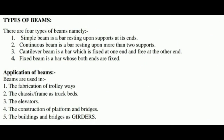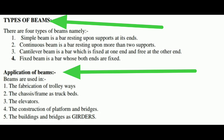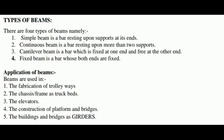In the previous video we already learned about beams — especially the expression for a rectangular beam. In this video we will see the types of beams and applications of beams. There are four types of beams: the first is a simple beam, second is a continuous beam, third is a cantilever beam, and fourth is a fixed beam.